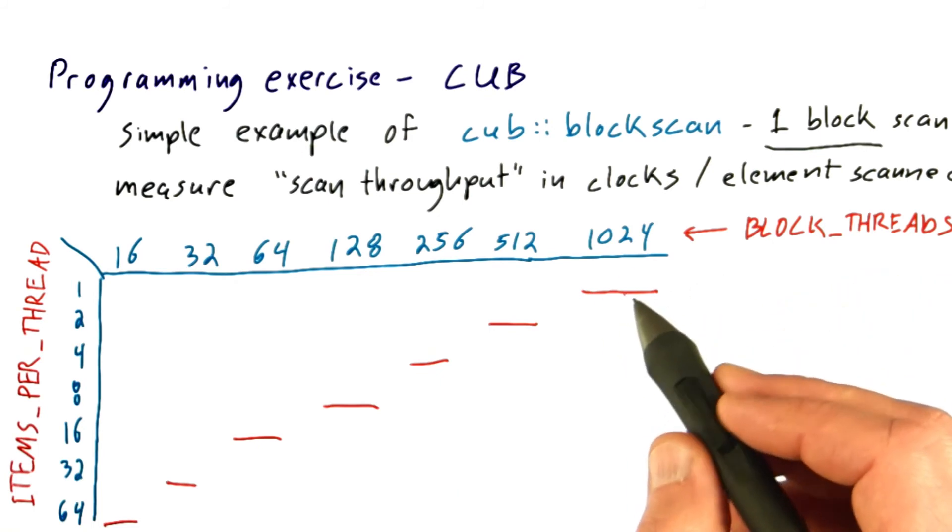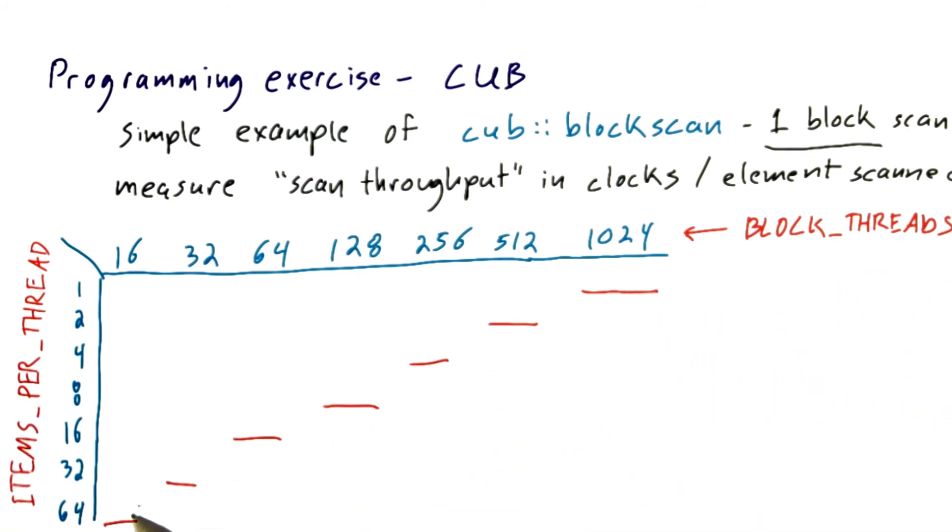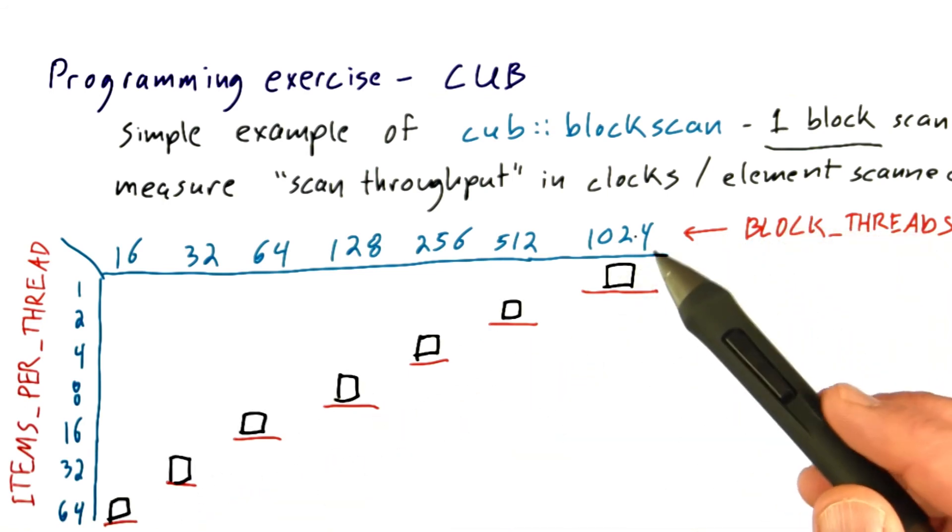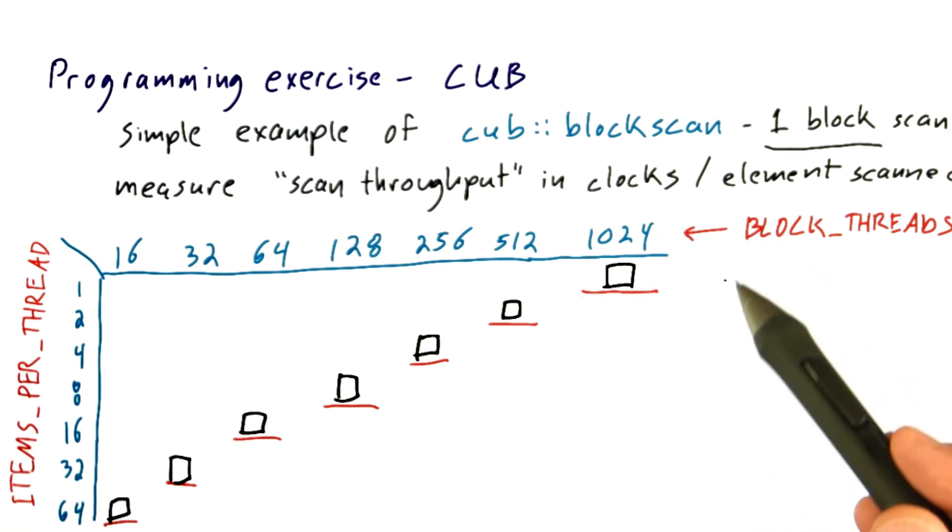Fill in this diagonal and check off the option that gives you the best performance—the highest scan throughput, which corresponds to the fewest clocks per element scanned.